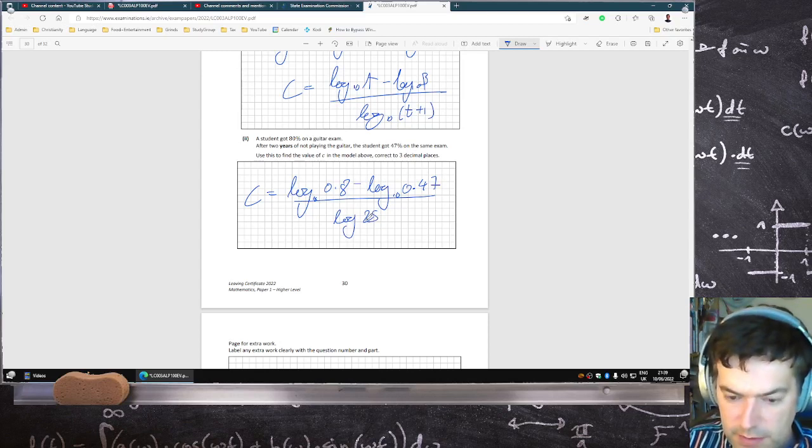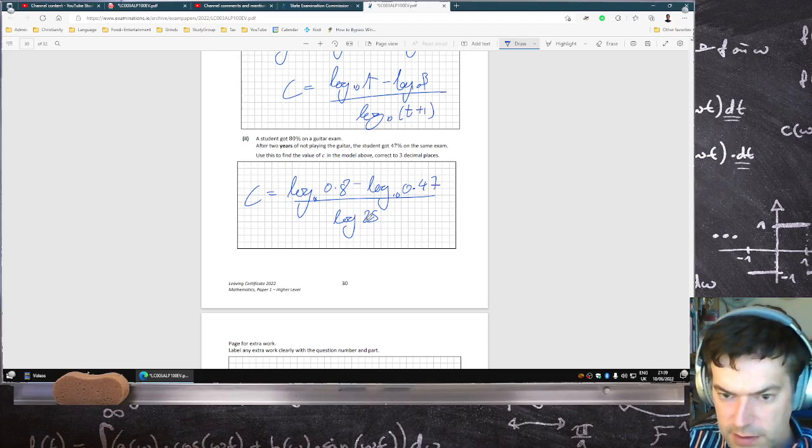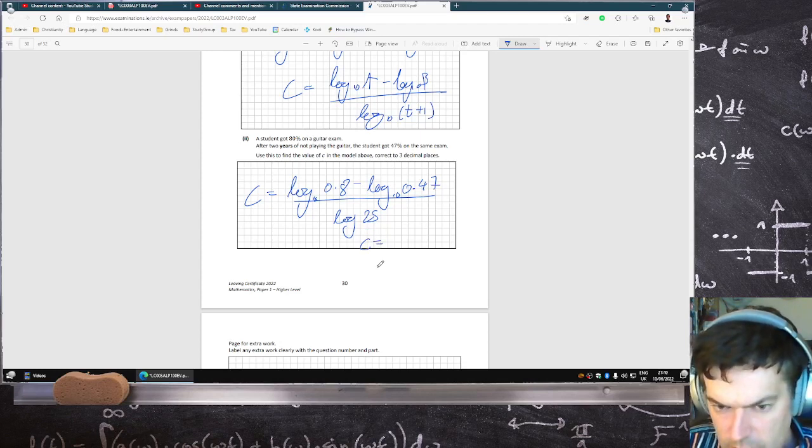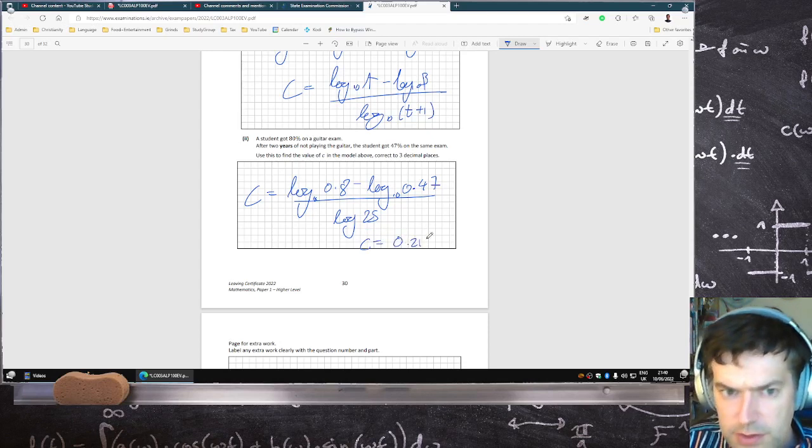Log 0.8 minus log 0.47 over log 25. And that means C is 0.215.